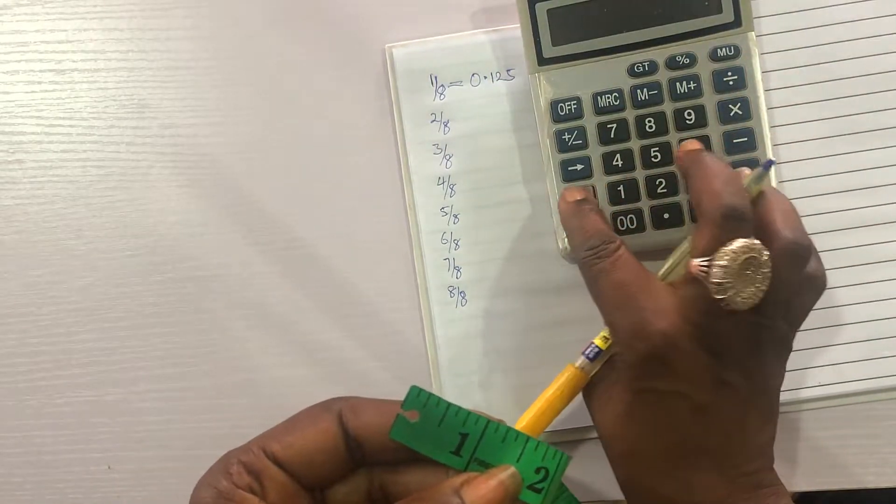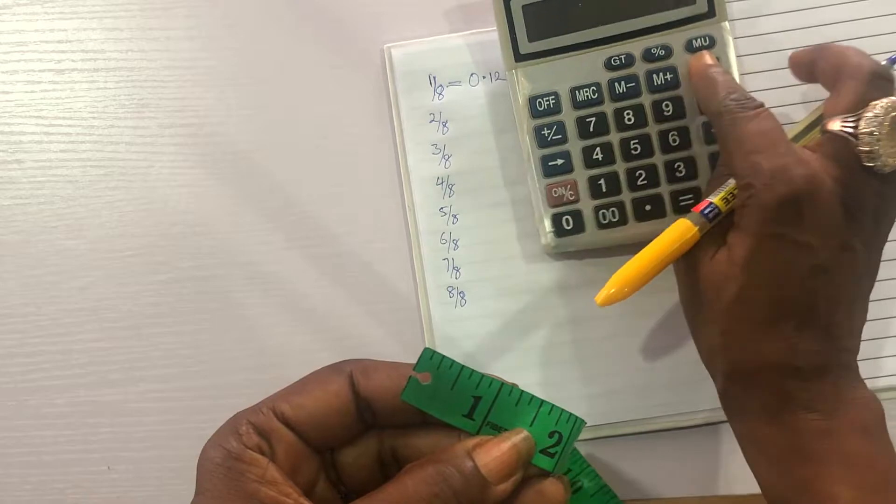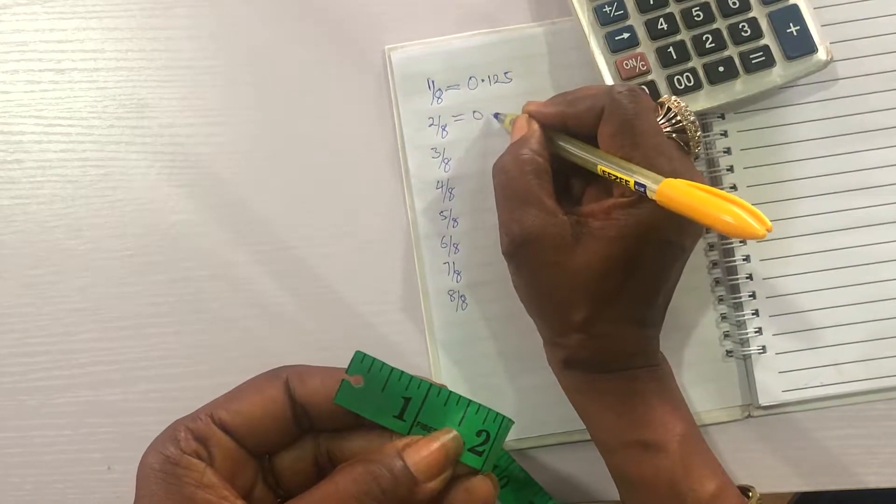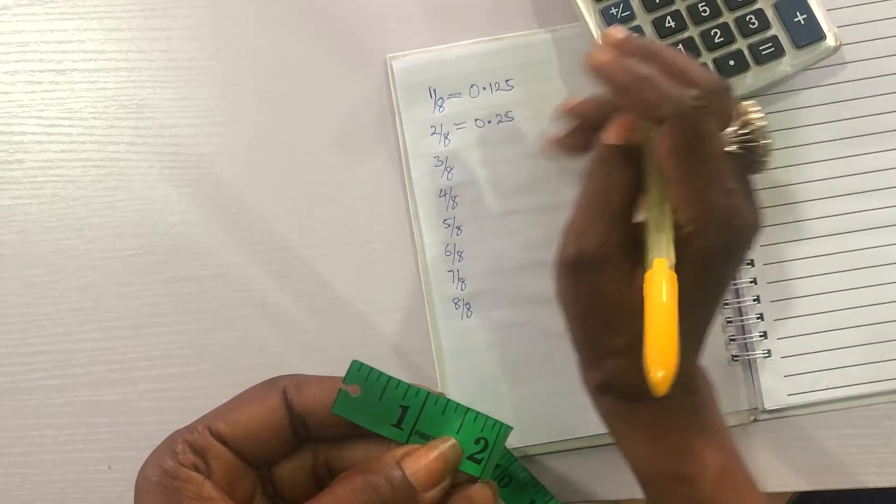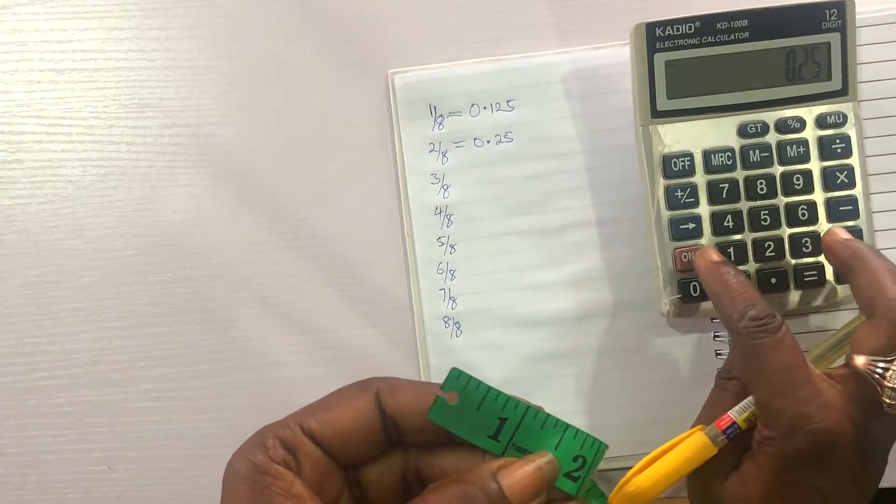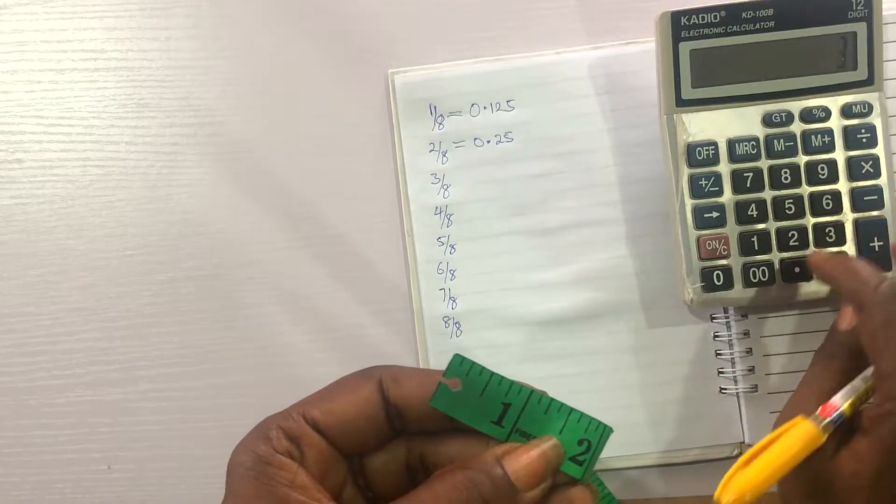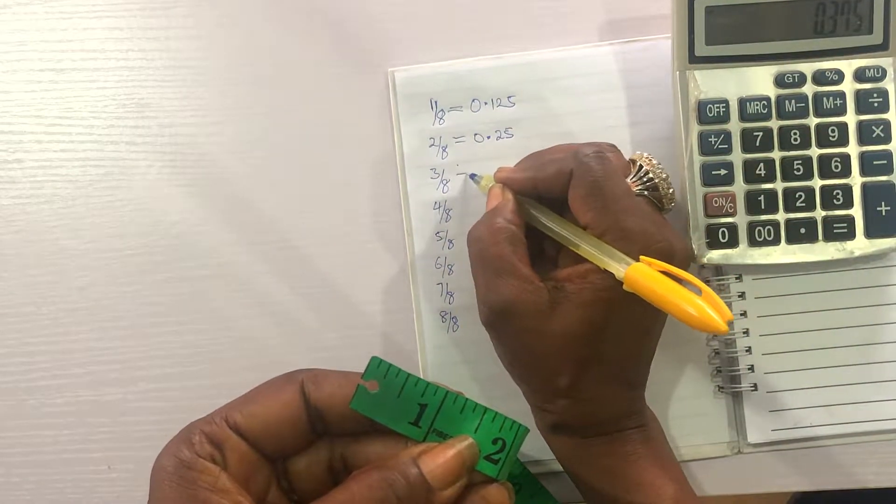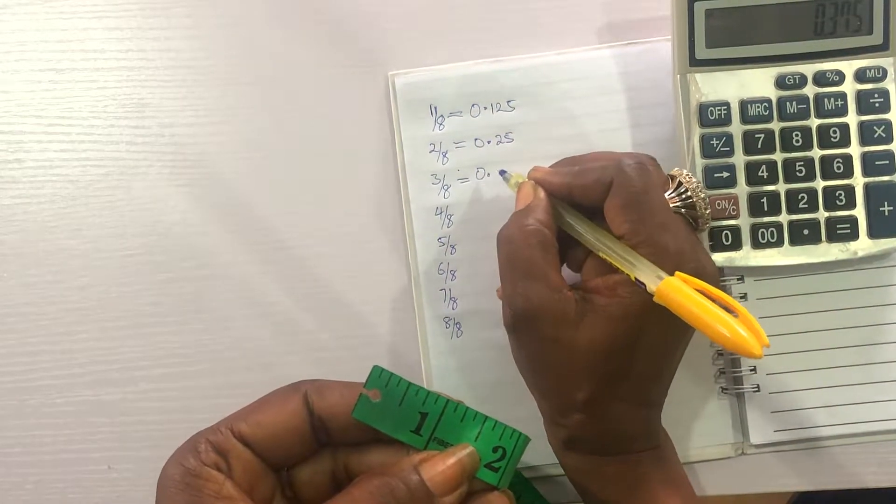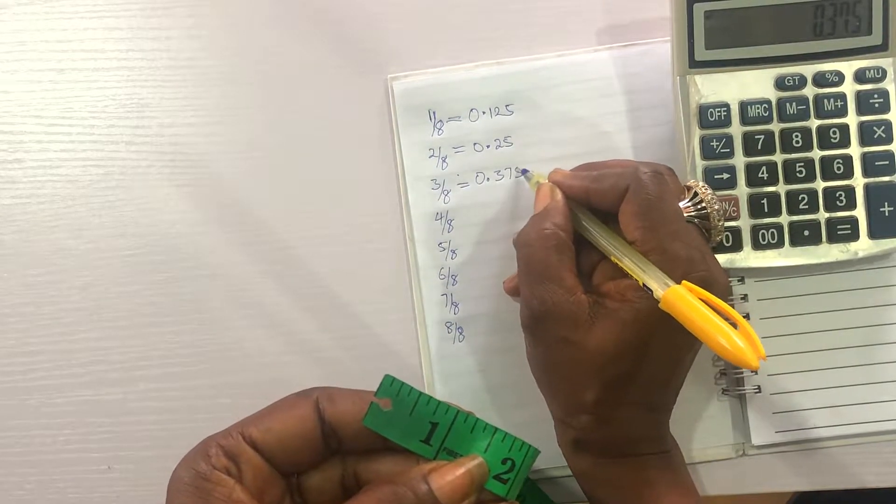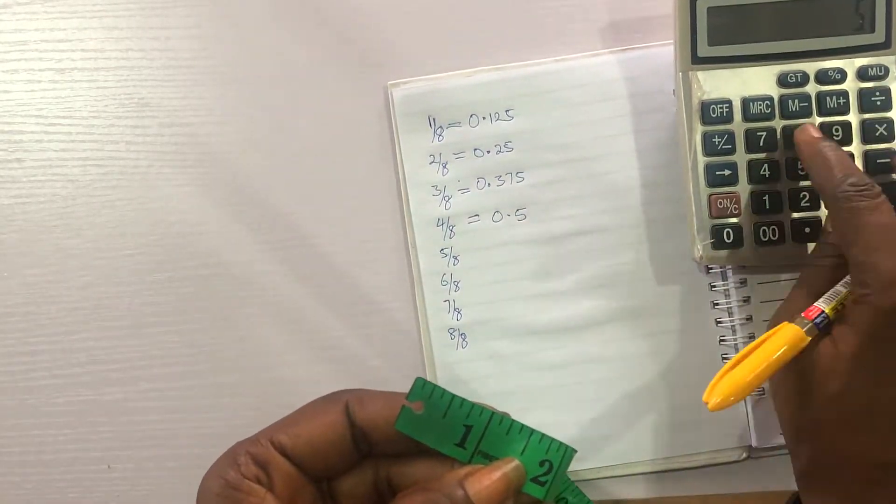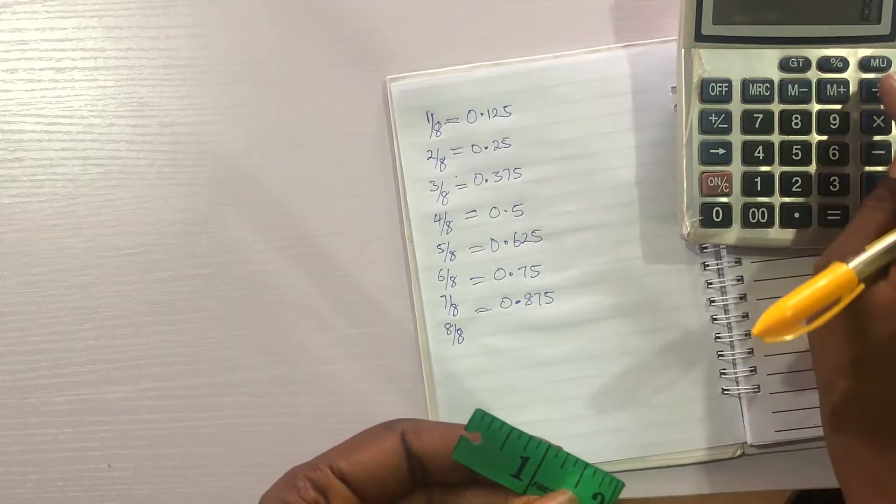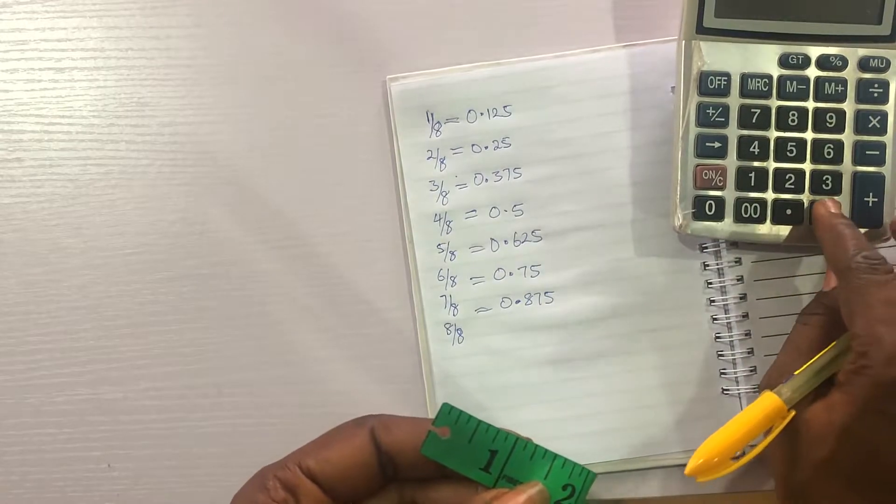Two over eight equals 0.25. Three over eight, three divided by eight, gives us 0.375. Eight divided by eight equals one.